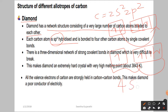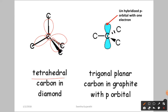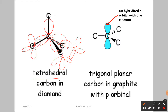sp3 hybridization gives 4 sp3 hybrid orbitals with a tetrahedral shape. Each carbon undergoes sp3 hybridization and these 4 hybrid orbitals overlap with the hybrid orbitals of neighboring carbon atoms, forming a large network structure.